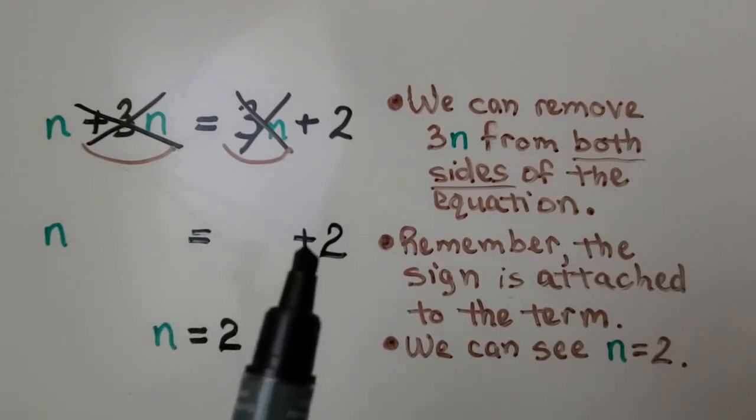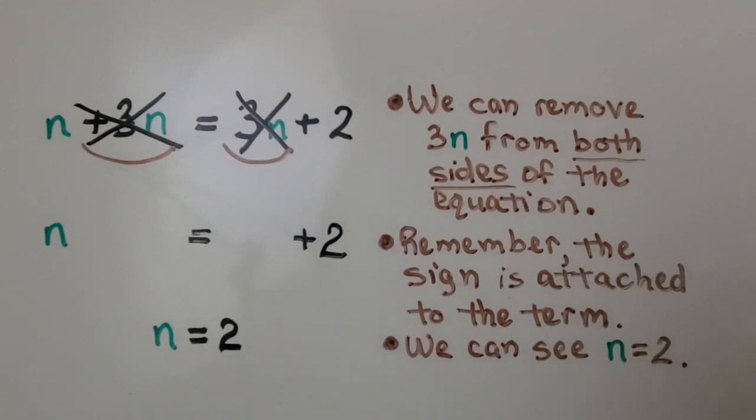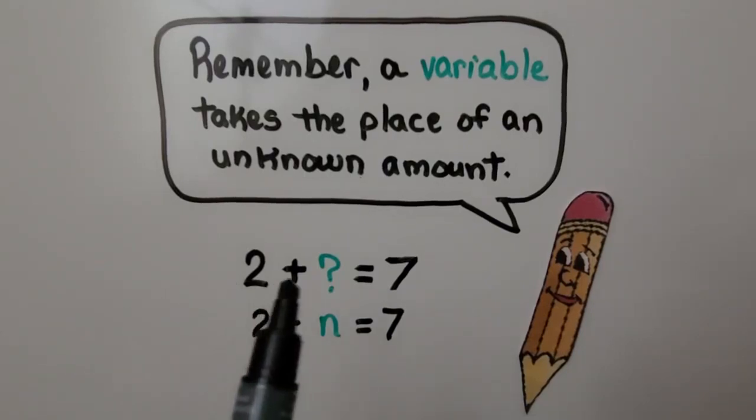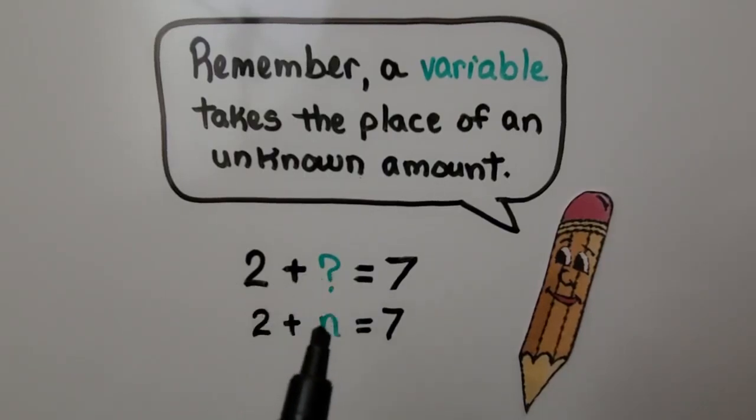We don't need to write that positive sign, so we can just write n is equal to 2. And remember, a variable just takes the place of an unknown amount. Instead of putting a question mark here, we just put a letter of the alphabet or a symbol to take the place of that unknown amount.